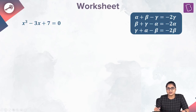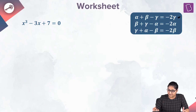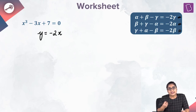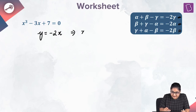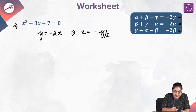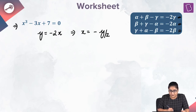We have to frame an equation whose roots are minus 2 gamma, minus 2 alpha, and minus 2 beta. So we'll substitute y equal to minus 2x. If y is equal to minus 2x, then x is equal to minus y by 2. Now we are going to put this value of x into the equation x cube minus 3x plus 7 equal to 0.